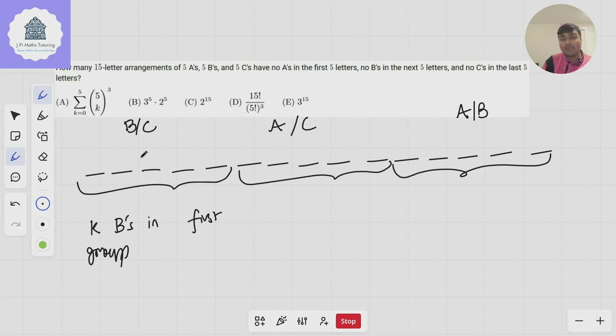We could put 1 B, 2 Bs, 3 Bs, 4 Bs, or all five Bs in this group. So K here is an integer from zero through to five.